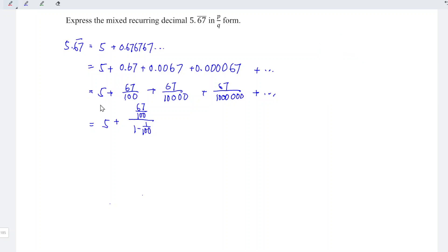Let's evaluate the denominator. 1 can be written as 100 over 100, which means that this series can be written as 5 plus 67 over 100 divided by (100 minus 1, which is 99) over 100.